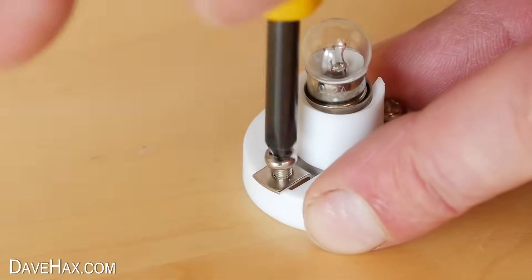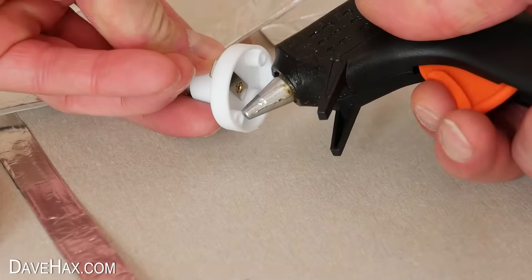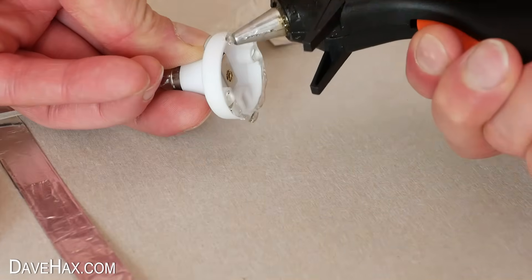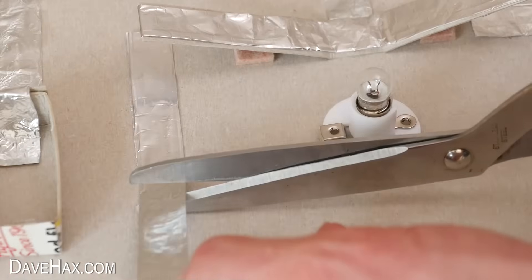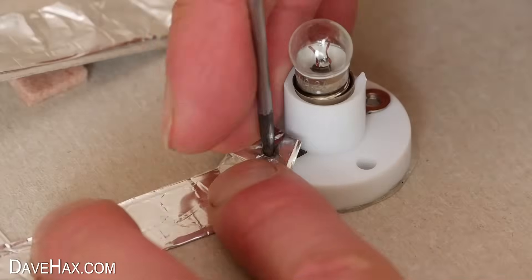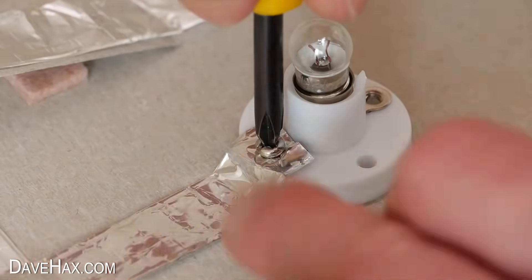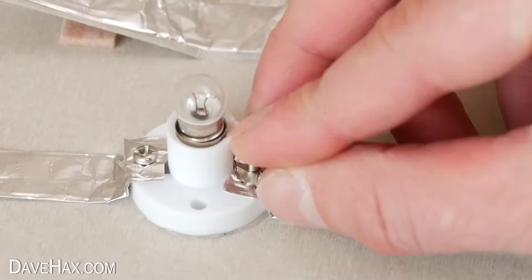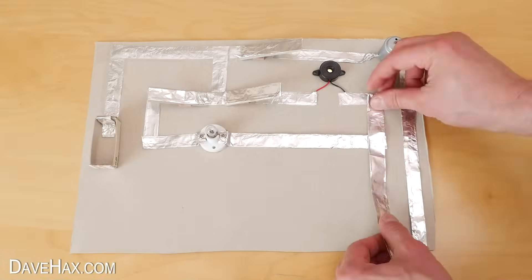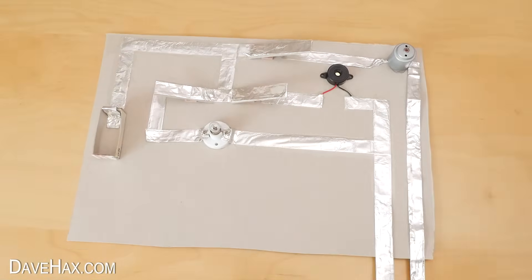I'm removing these connection screws then using the glue gun to fix it in place. Continue building the circuit and I used the screws to attach the foil to the bulb holder. Continue with the circuit and hold it in place with more strips of tape.